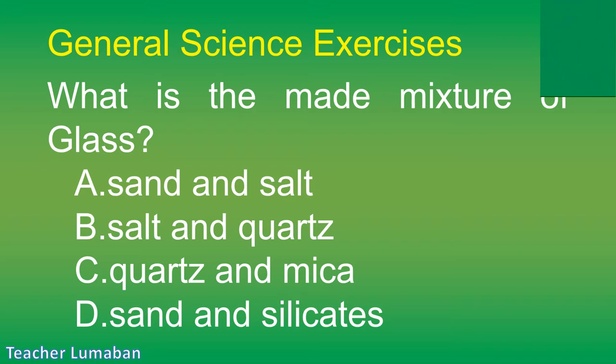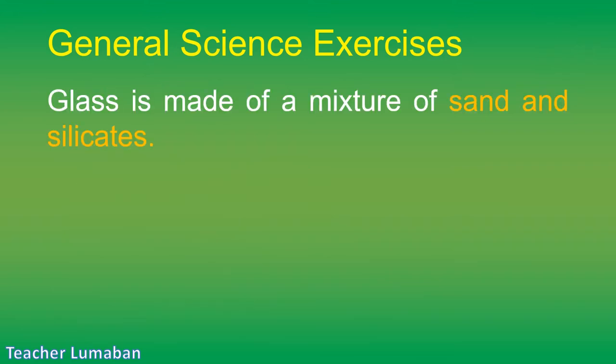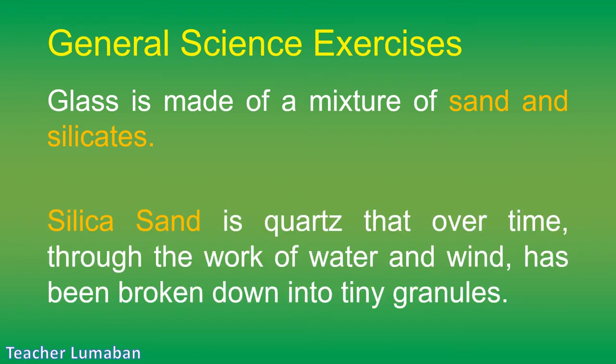The correct answer is Letter D: sand and silicates. Glass is made of a mixture of sand and silicates. Silica sand is quartz that, over time through the work of water and wind, has been broken down into tiny granules.